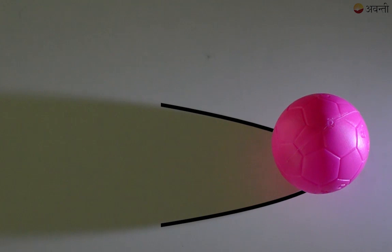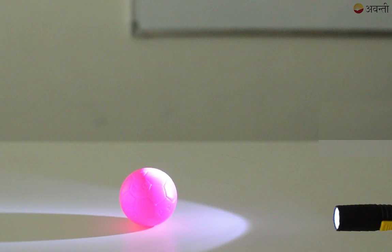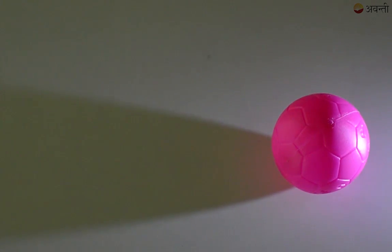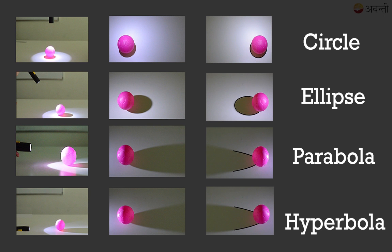Now when I further lower my torch, the shape of the parabola becomes sharper and the shape that I am now getting will be called a hyperbola. So you saw that when I changed the position of my torch, I was getting four different conic sections for different positions of the torch. You can also try this experiment at home.